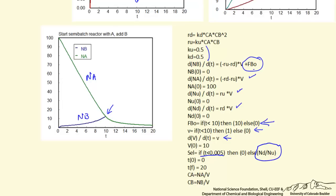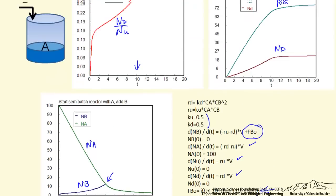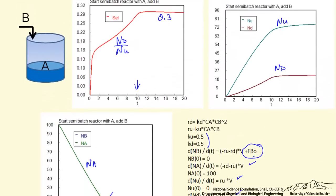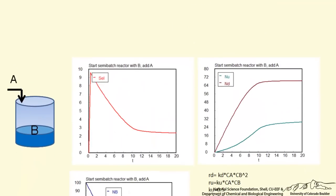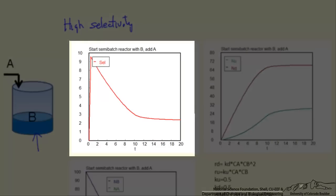So in comparison to this low selectivity case, where the selectivity is only 0.3 at its highest value, here is the high selectivity case. Now notice the selectivity at short times, concentration of B is very high, selectivity is 9.5, then the selectivity drops as more A is added, then the B is diluted because of adding A and because of reaction, and the selectivity is approximately 2.5 or maybe a little higher at the longer time.